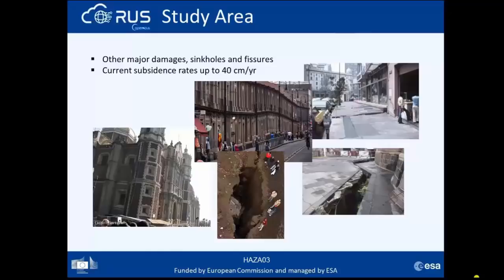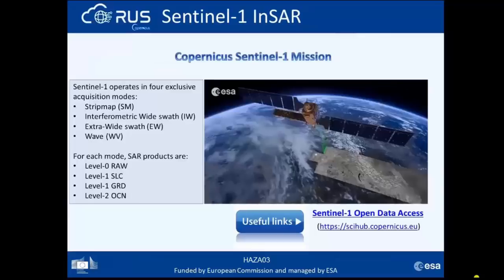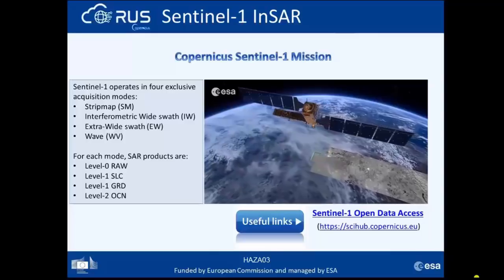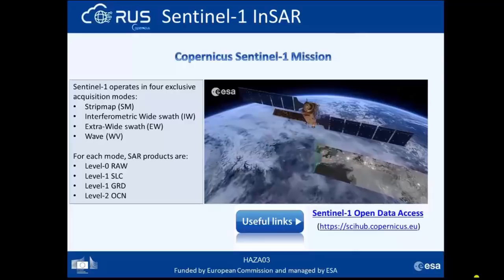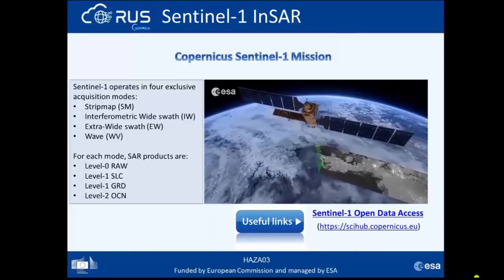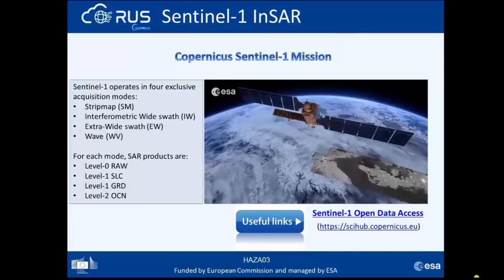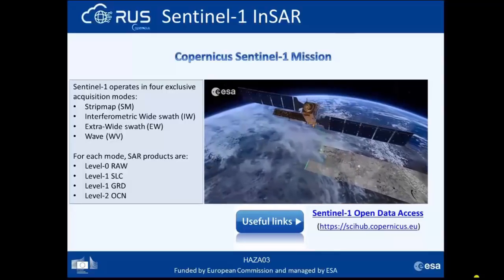Let's continue with a brief presentation about Sentinel-1 data we will use and the interferometry method we will apply in the exercise to monitor land subsidence in Mexico City. The Copernicus Sentinel-1 mission, based on a constellation of two satellites operating in C-band, is used to track changes in land and monitor ground movements. The revisit cycle of 6 days on a global scale provides a high level of service reliability, which is really important for earth observation and risk management applications.